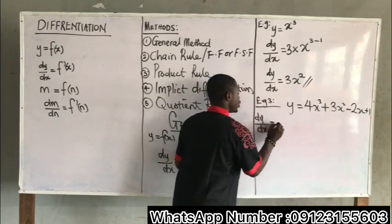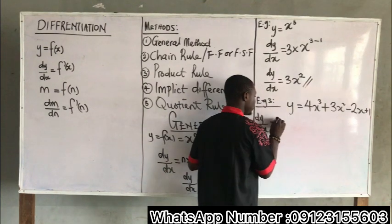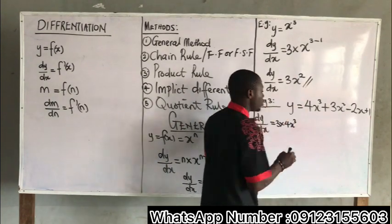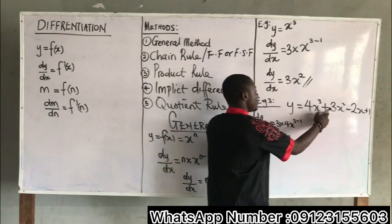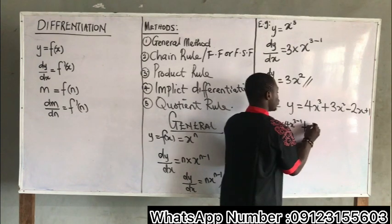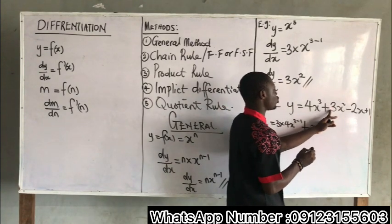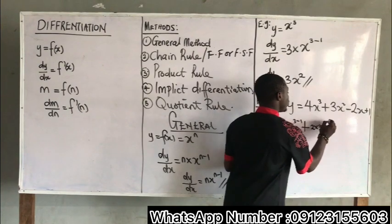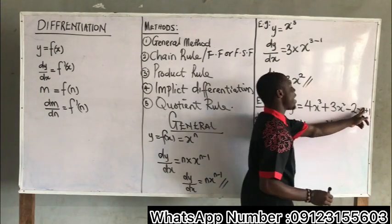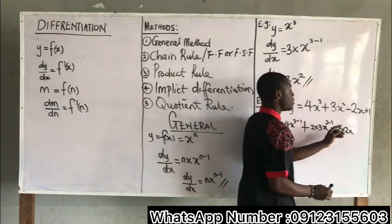Applying the general method term by term: for 4X cubed, the power is 3, so 3 times 4X gives 12X, subtract 1 from the power to get X squared. For 3X squared, the power is 2, so 2 times 3 gives 6X, subtract 1 from the power to get X to the first power. For minus 2X, the power is 1, so 1 times 2X gives 2X to the power of 1 minus 1, which is X to the power of 0.